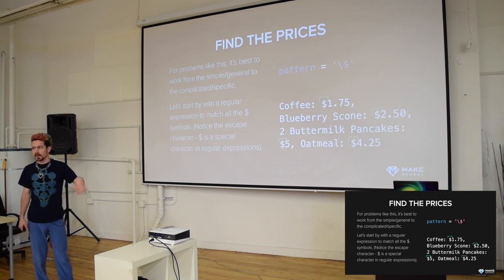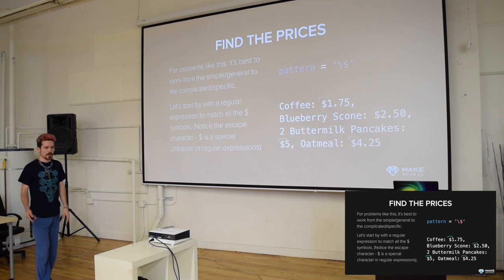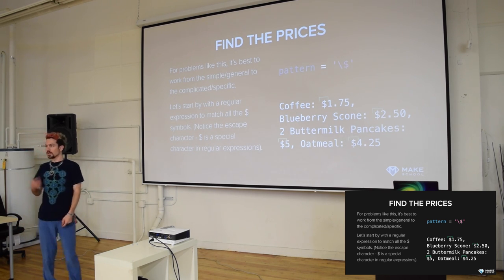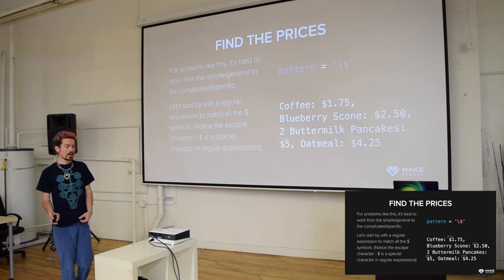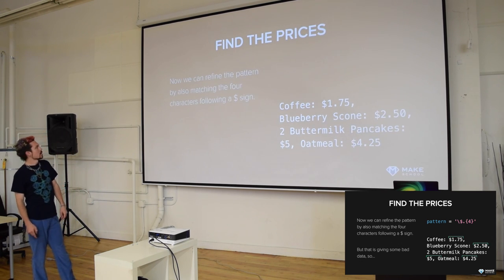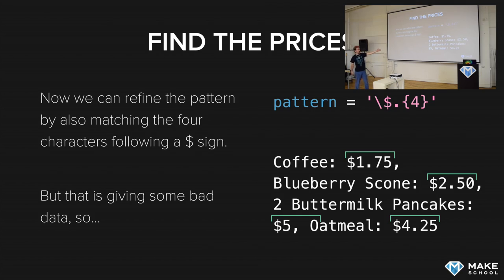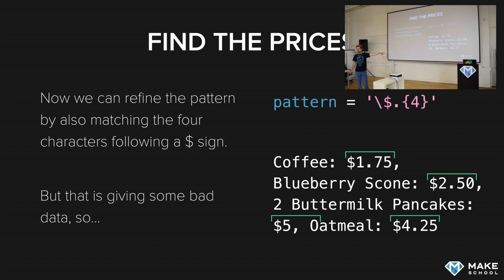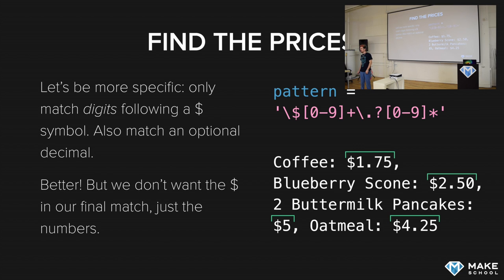Imad suggested matching digits or periods. One approach is to say 'four of anything' - but that incorrectly matches '5, O5, O space O' in one of the prices. A better pattern uses square bracket notation: bracket zero dash nine close bracket means any digit from zero through nine, specifying 10 different characters. This is the range of digits.